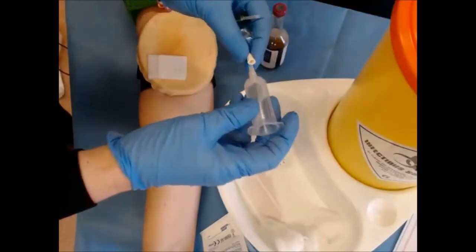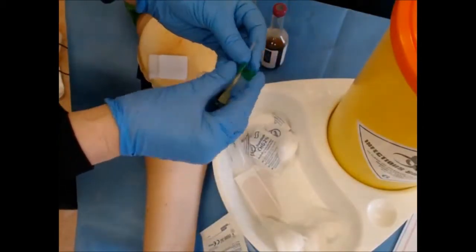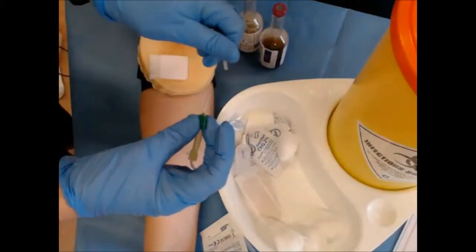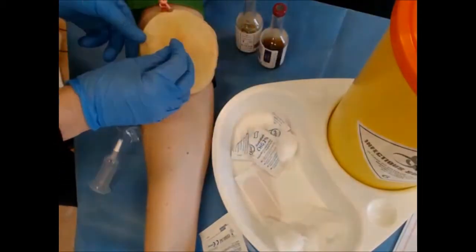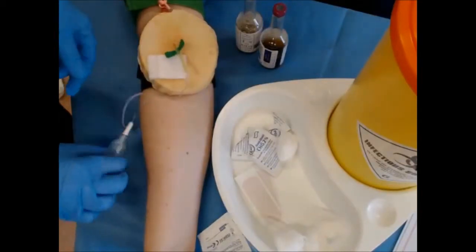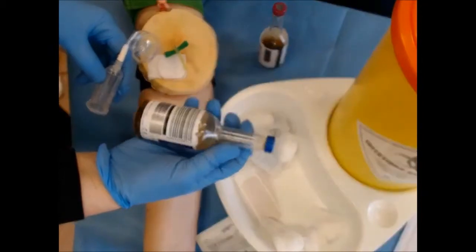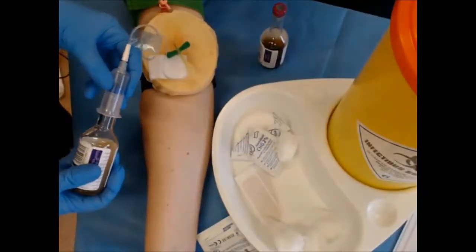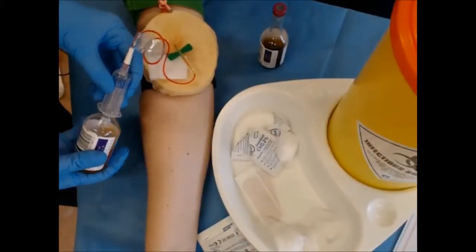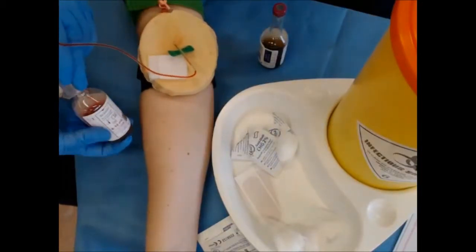OK, so open up your butterfly needle, just hold the little wings together, make sure that the bevel is facing up, insert the needle into the vein and then take your bottles. So as I said, we fill aerobic first. So connect that and allow. So if you stand your bottle up, you'll see when it reaches the 8 to 10 mil mark.